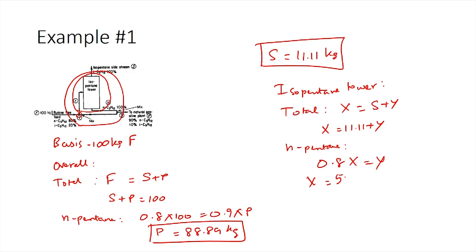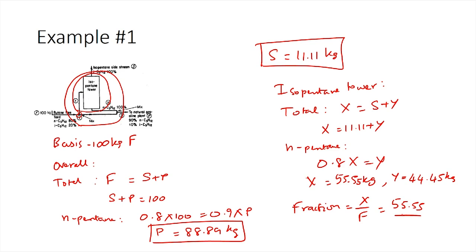Solving the two equations, X equals 55.55 kilograms and Y equals 44.45 kilograms. The fraction passed through the isopentane tower is X divided by F, which is 55.55 divided by 100, giving a value of 0.5555. With that, we have solved for the required parameters.